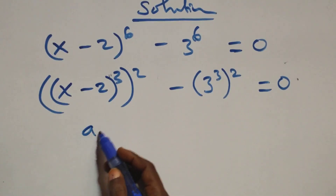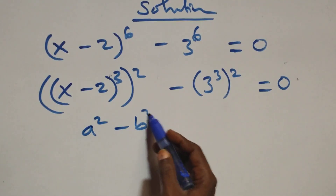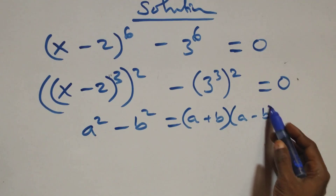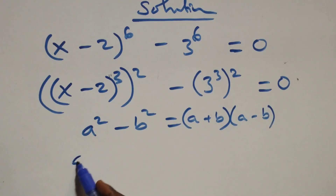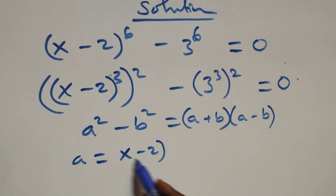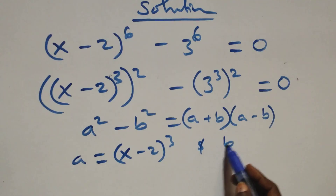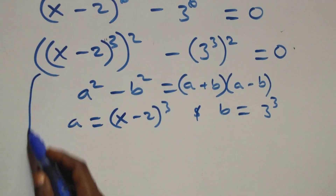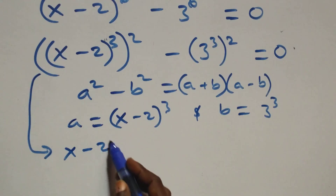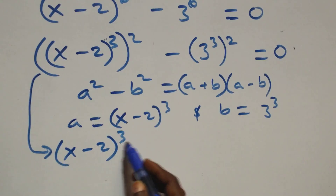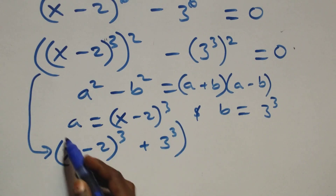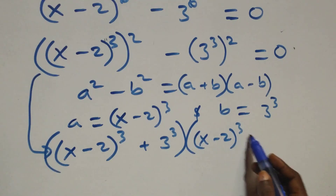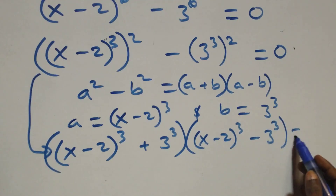Then this follows: we have a squared minus b squared, which is the same thing as (a + b)(a - b). Here, a stands for x minus 2 all raised to power 3, and b stands for 3 raised to power 3. So all we have becomes: (x minus 2)³ plus 3³, times (x minus 2)³ minus 3³, equals 0.